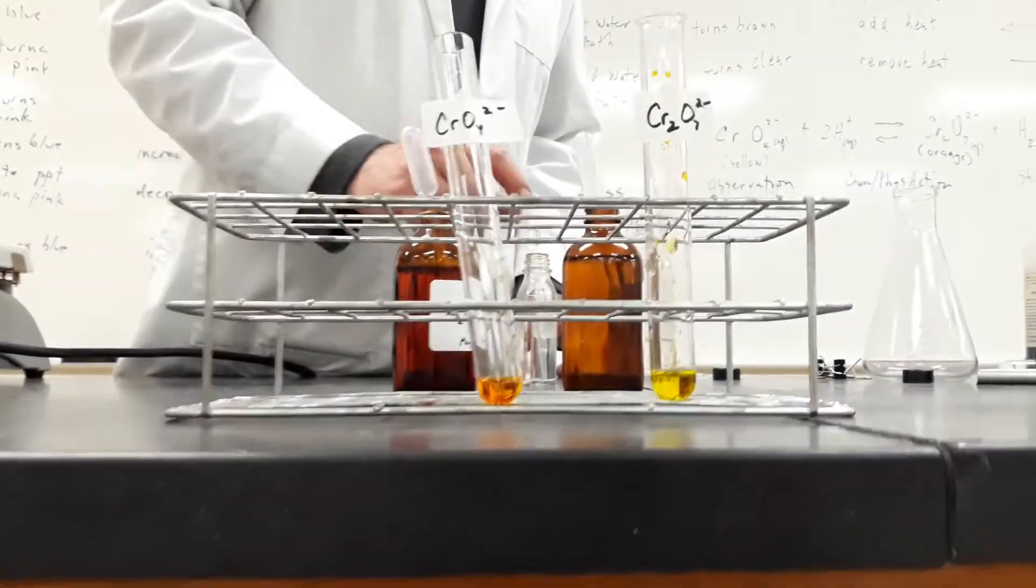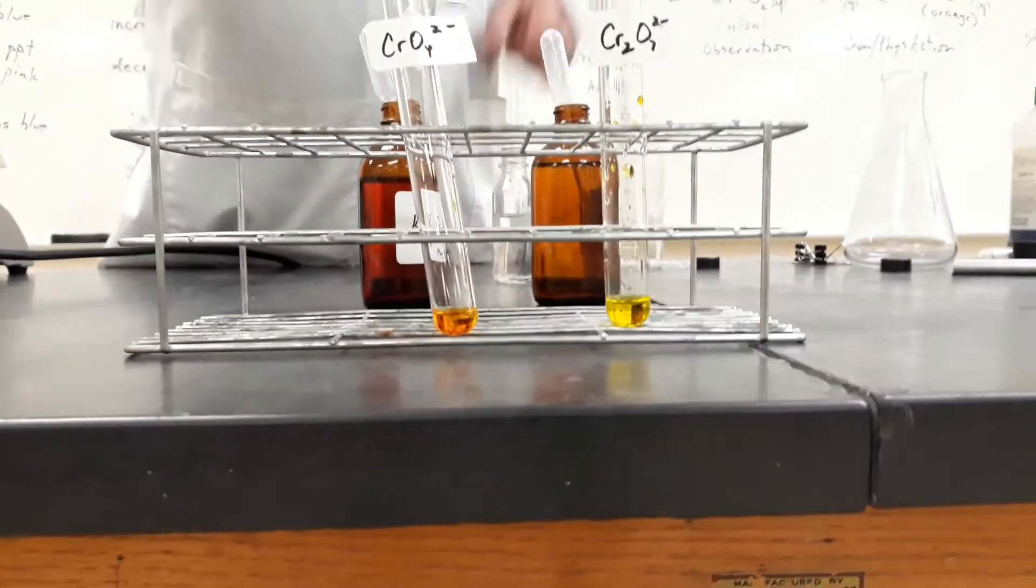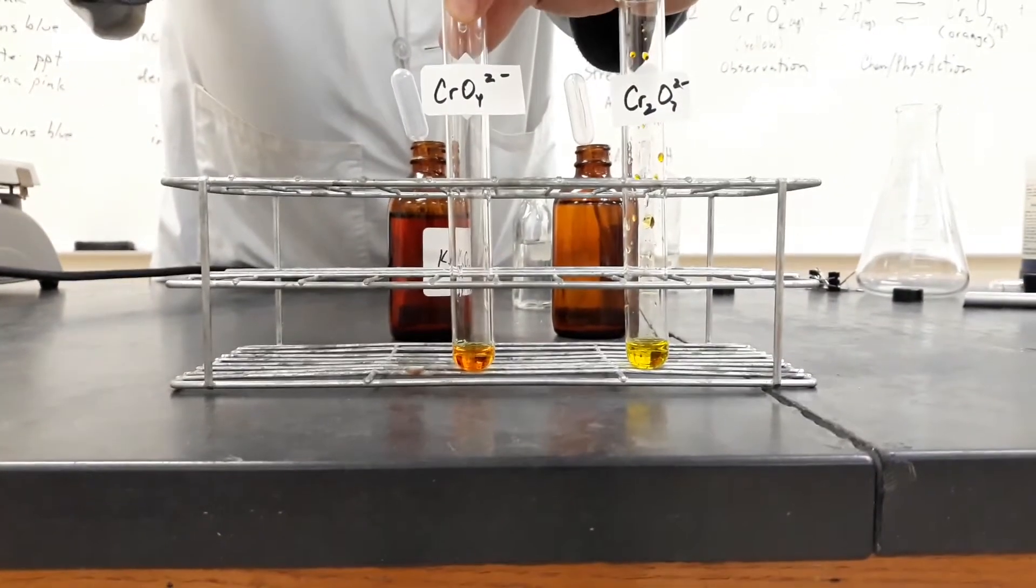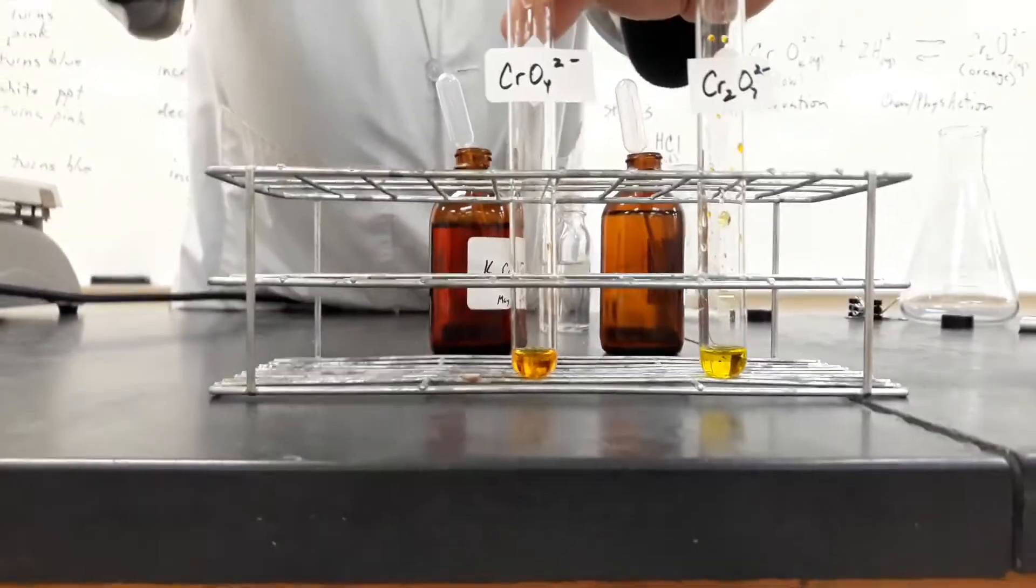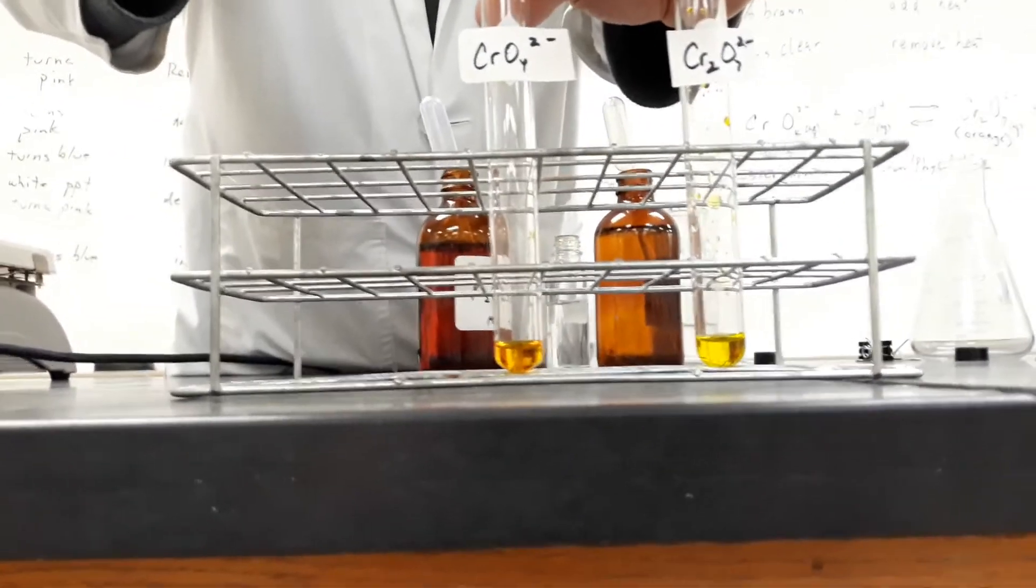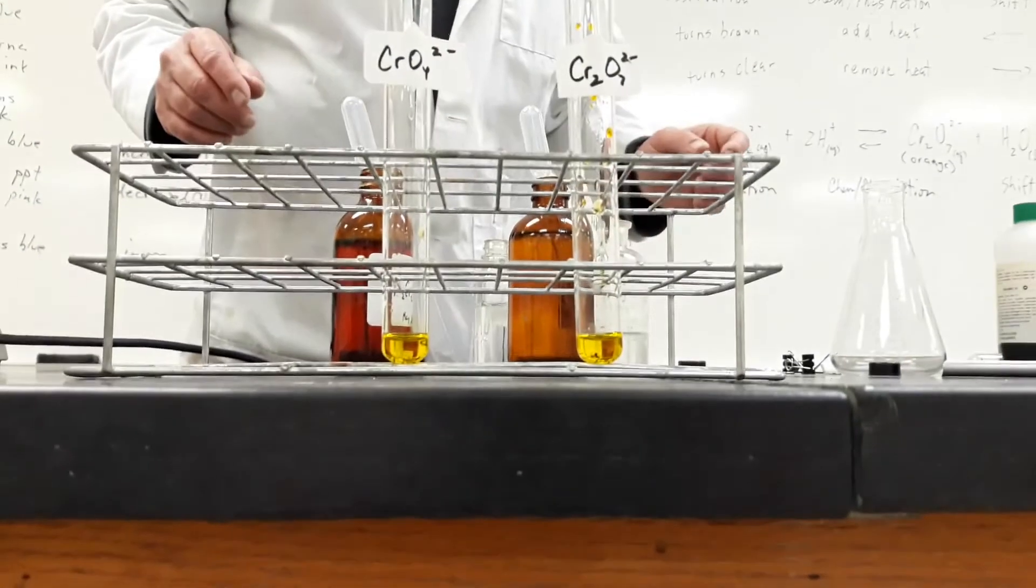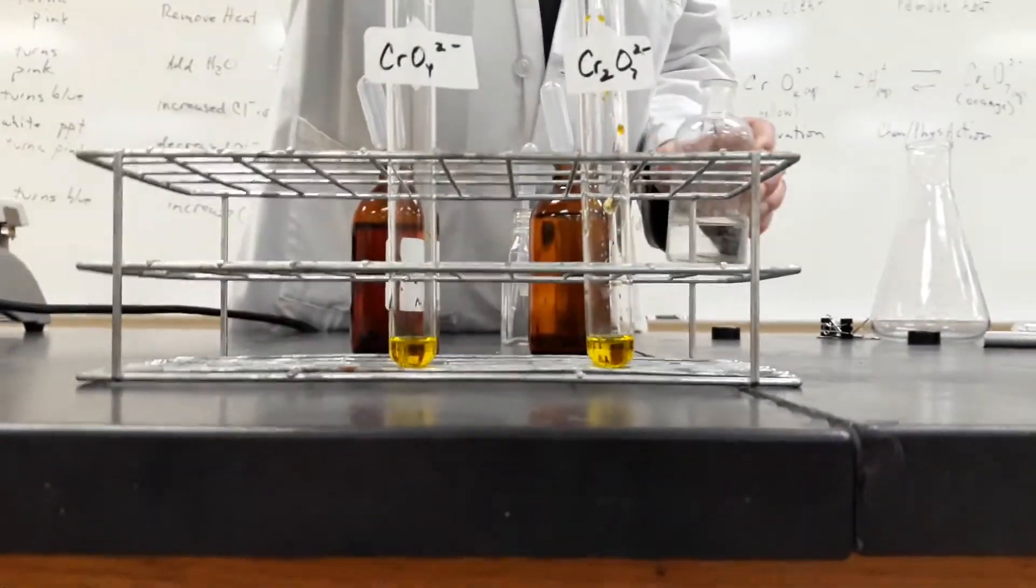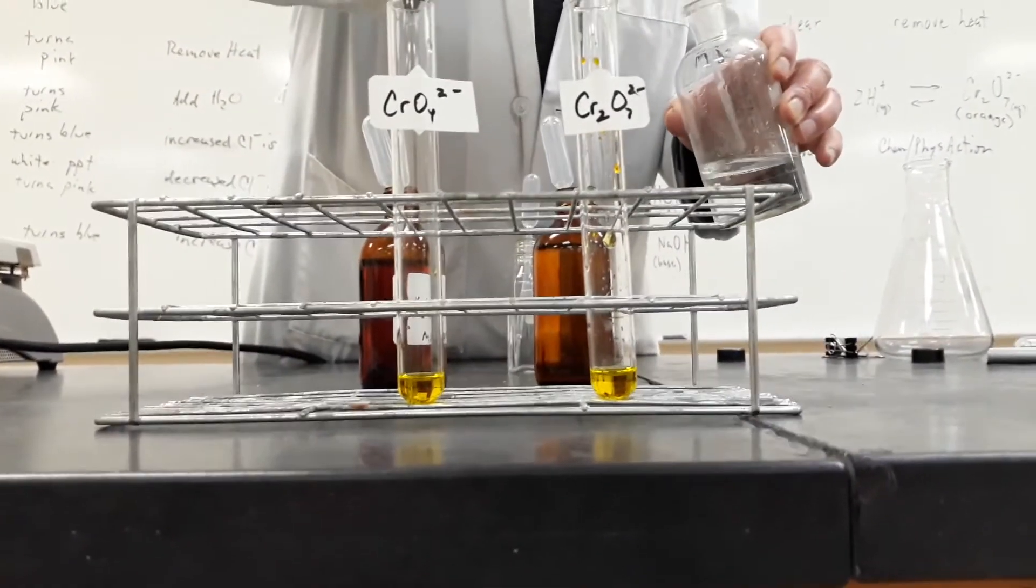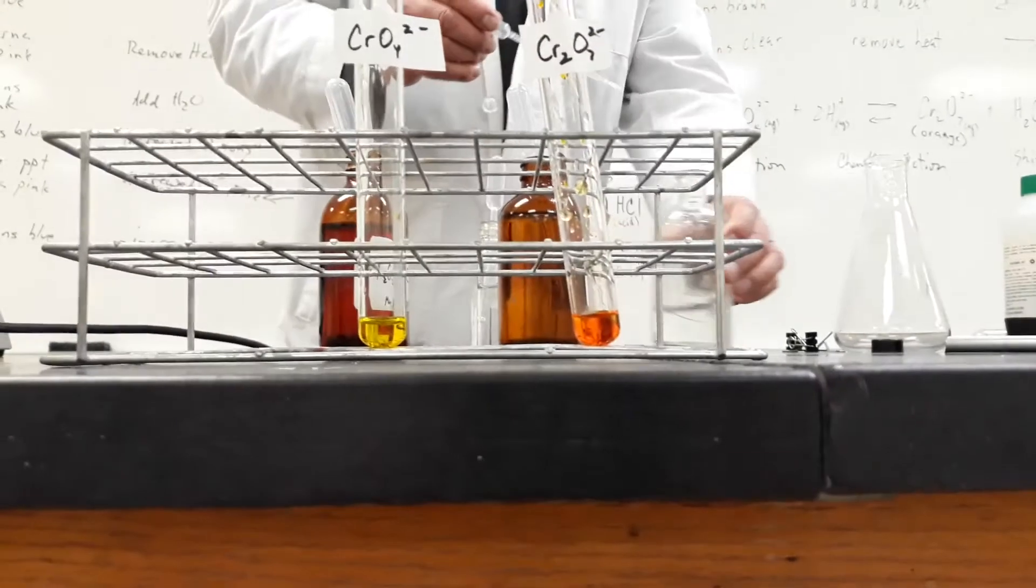Now you might be thinking, can we go back the other way? So I'll add sodium hydroxide to this one. And it turns yellow. And sulfuric acid to the other one. And it turns back to orange. So you can shift equilibrium multiple times back and forth.